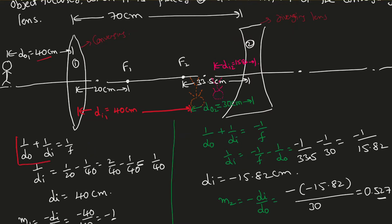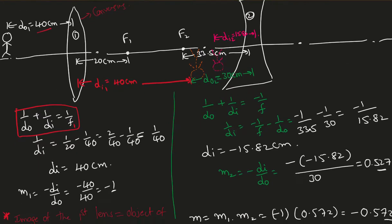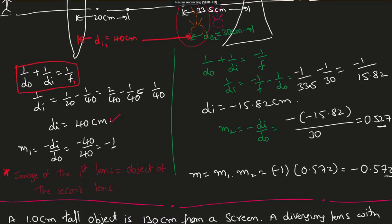Using the lens equation for lens one: 1/D_o + 1/D_i = 1/F1. Solving: 1/D_i = 1/20 - 1/40 = 1/40, so D_i = 40 cm. The magnification factor M1 = -D_i / D_o = -40/40 = -1. The positive D_i value indicates the image is behind the lens — 40 cm from it. The negative magnification means the image is inverted.